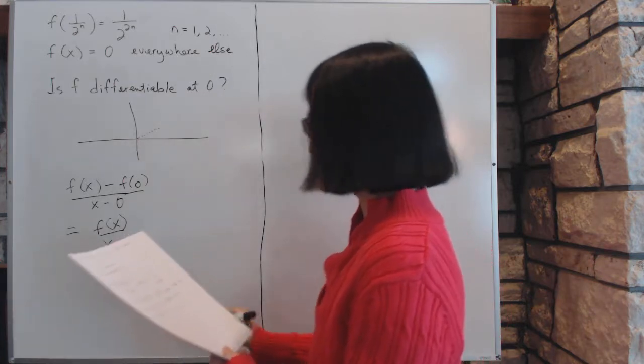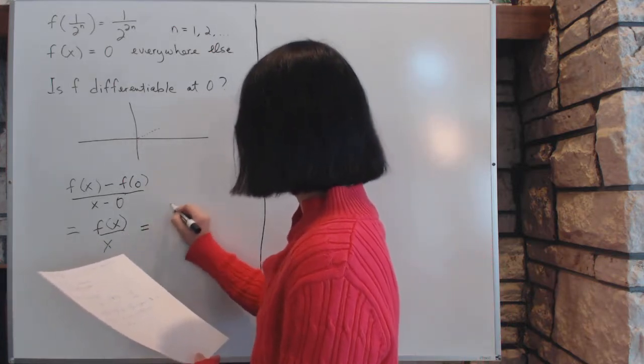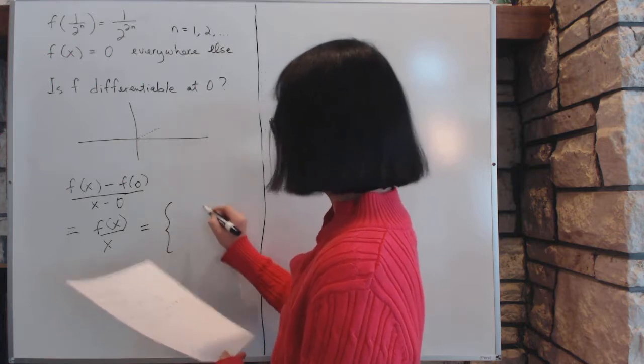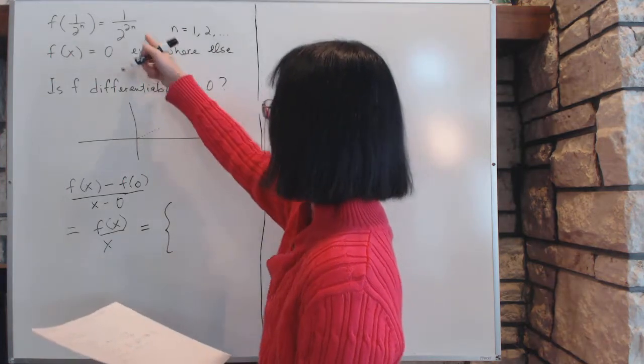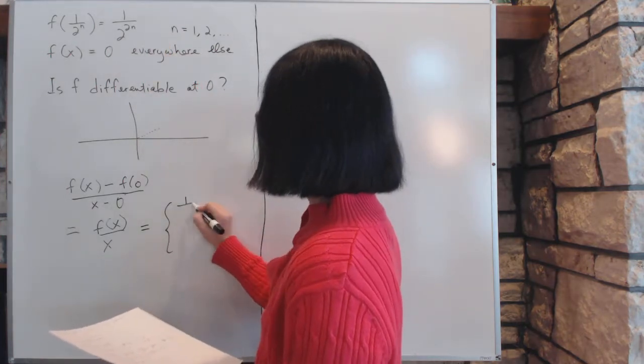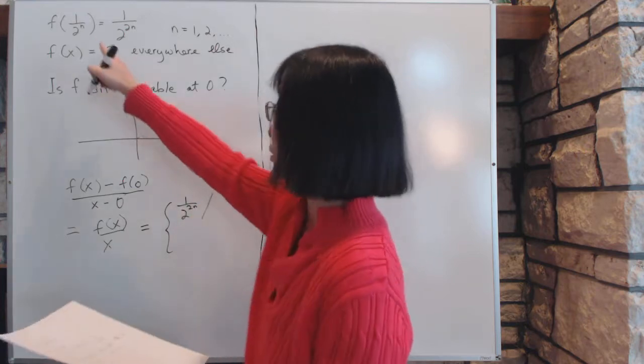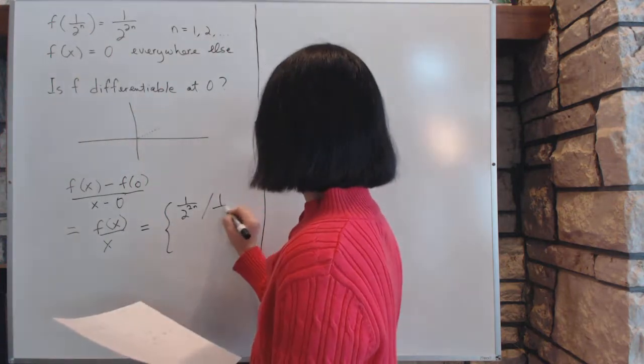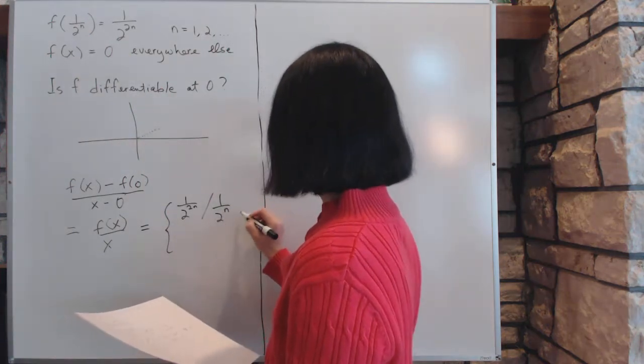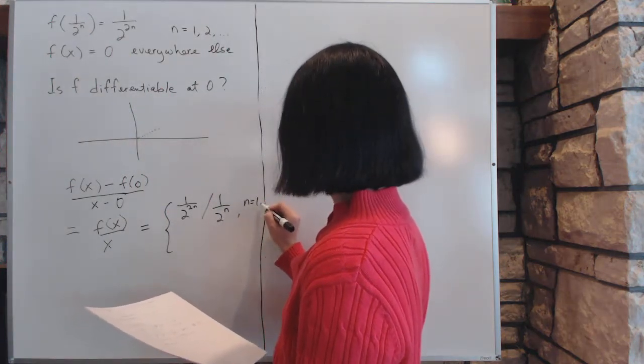Now what is that? This is going to be equal to two values. This thing is either equal to f(x), which is 1 over 2^(2n), divided by x, which is 1 over 2^n, for n equal to 1, 2, etc.